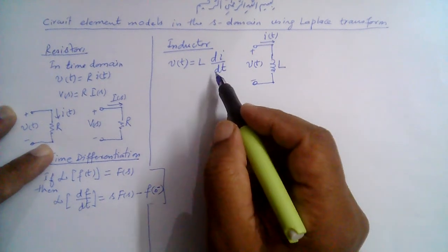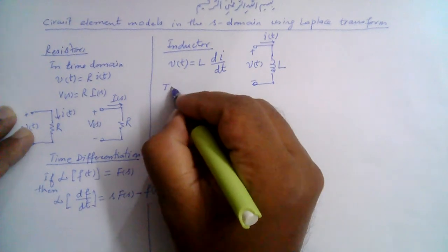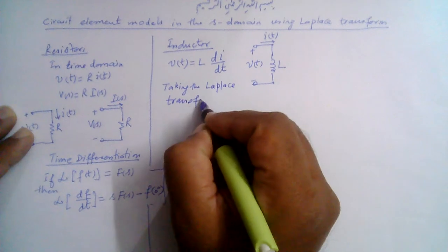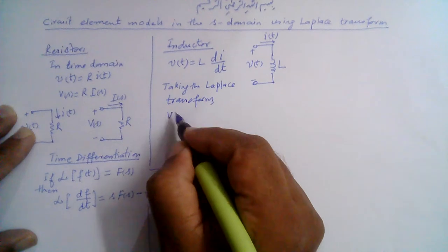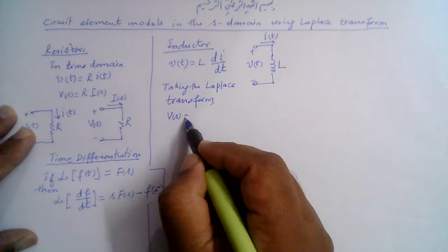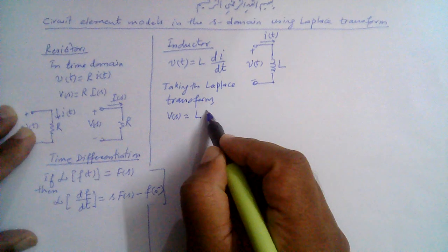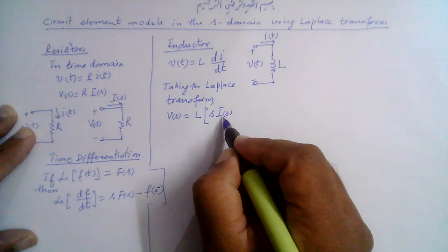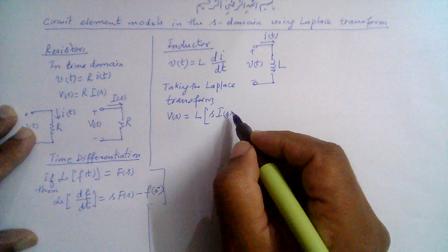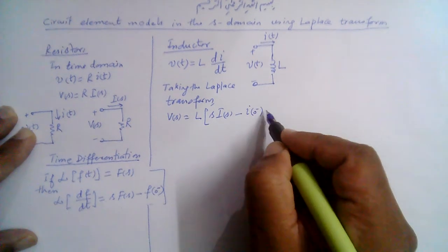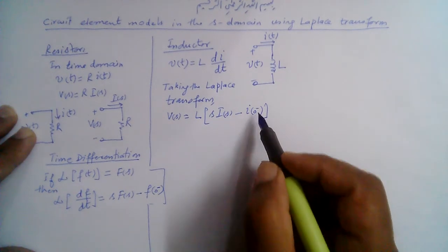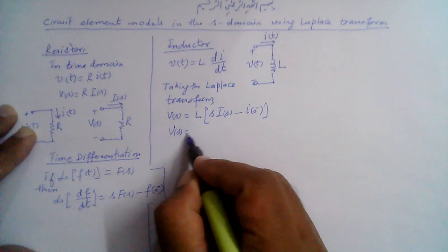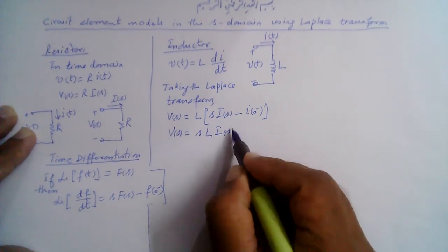If we take the Laplace transform of both sides and use the time differentiation property, we get V(s) is equal to L times [s·I(s) − I(0⁻)], where I(0⁻) is the value of the current at time zero negative. This can be further written as V(s) is equal to sL·I(s) minus L·I(0⁻).